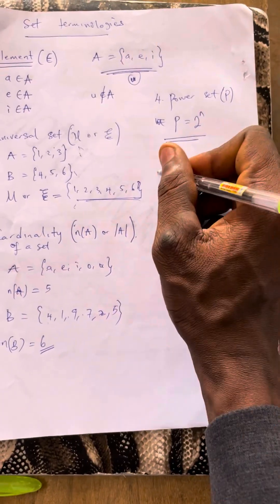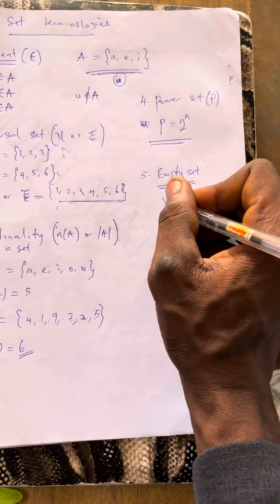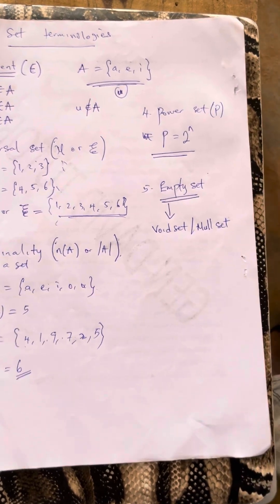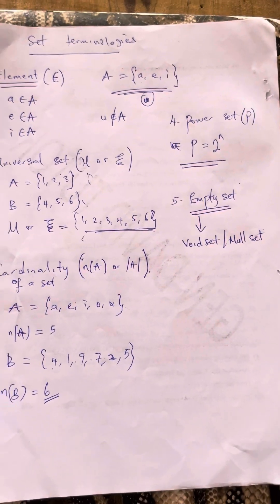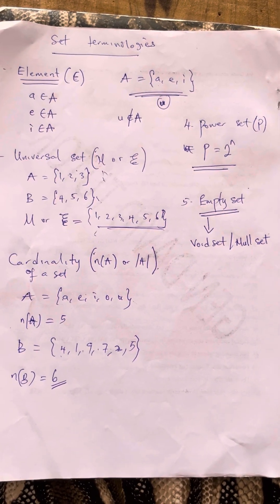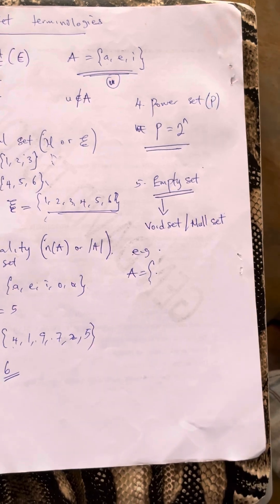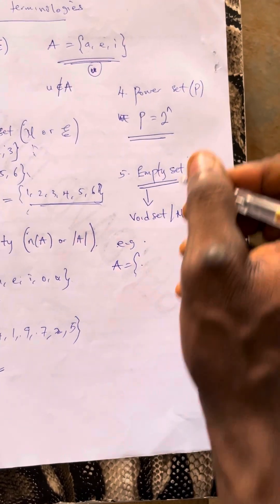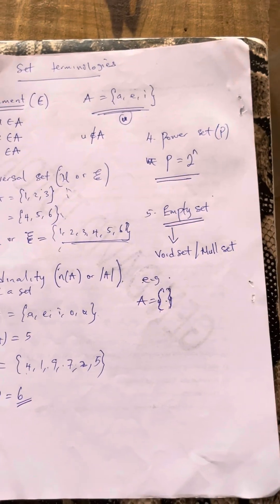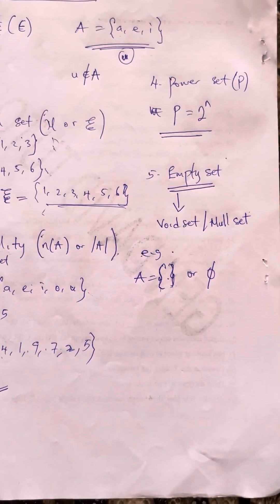Number five is the empty set. The empty set can also be known as void set or null set. An empty set is a set that consists of no elements — it is a set without elements. The notion of empty set is represented by empty curly brackets {} or a special symbol. For example, set B = {X such that X is an element of N and X < 0}. Since natural numbers are positive whole numbers, there are no natural numbers less than zero, so B is an empty set.